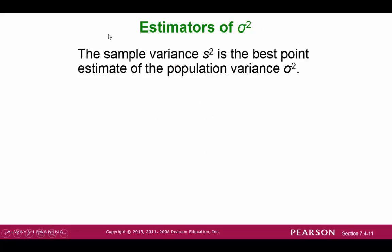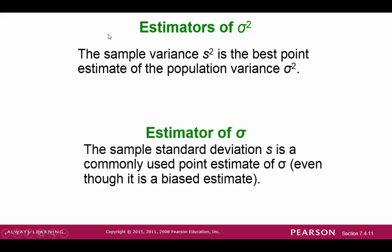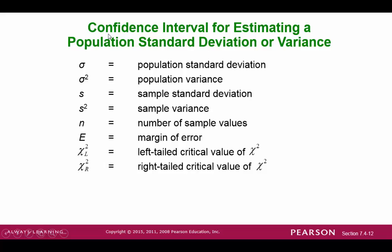Our best point estimate for the population variance is the sample variance. Likewise, our best point estimate for the population standard deviation is the sample standard deviation. The symbols we'll use in the formula include: population standard deviation and variance, sample standard deviation and variance, sample size n, and the left and right tail critical values of chi-square.